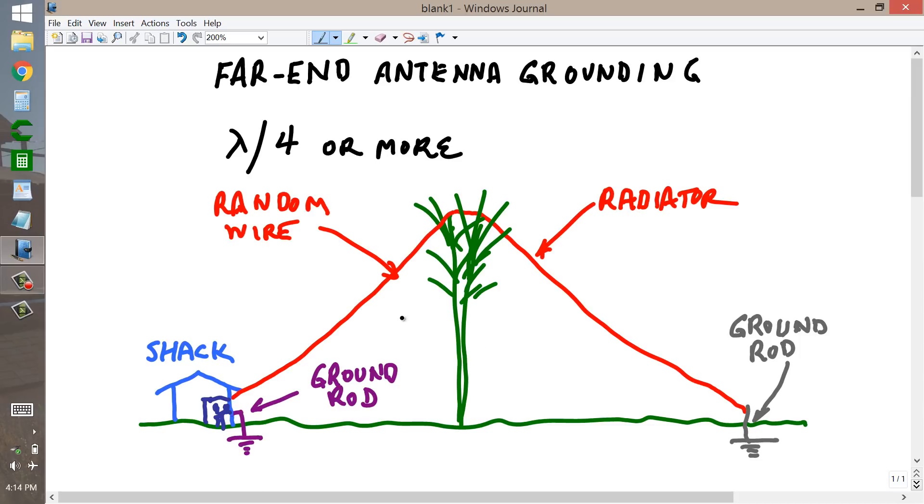But, normally you think of the far end of an antenna as being free, an insulator and some rope and a support. And it is usually high up in the air, but it does not have to be, especially on the lower bands.